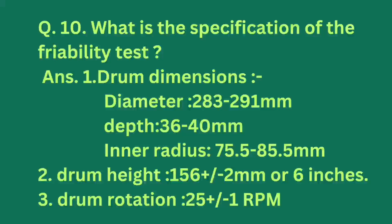Next question: What are the specifications of the friability test? Answer: Drop dimension diameter is 283 to 291 mm, depth is 36 to 40 mm, inner radius is 75.5 to 85.5 mm, drum height is 156 plus or minus 2 mm, and drum rotation is 25 plus or minus 1 RPM.